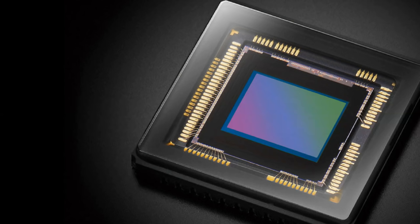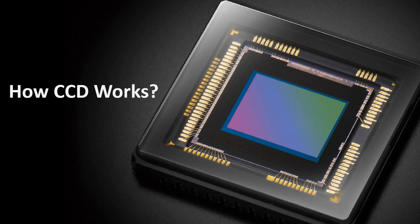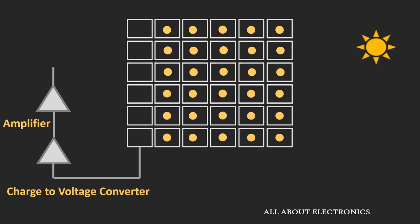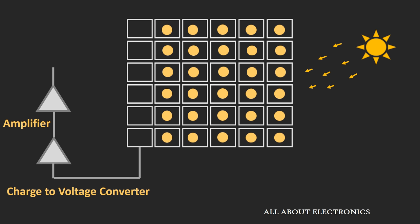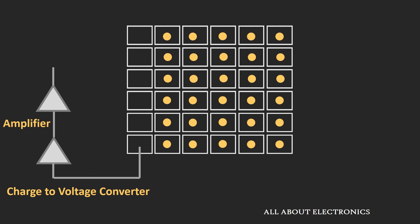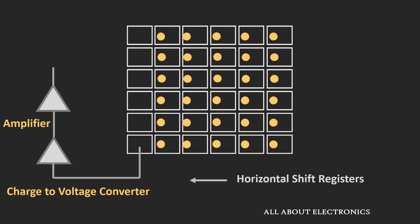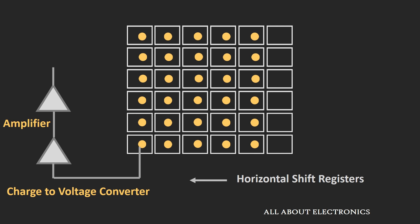Now let's understand how the charge coupled device or CCD works. As mentioned, the CCD consists of millions of pixels. As these pixels are exposed to incoming light, they convert the light into charge, and the charge accumulates in these pixels. Once the charge is collected, it is transferred using this horizontal shift register, and this charge is transferred into the vertical shift register.